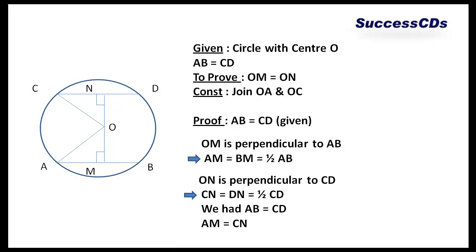OM and ON are respectively going to be perpendiculars to AB and CD because distance measured from a point to a line is always perpendicular.